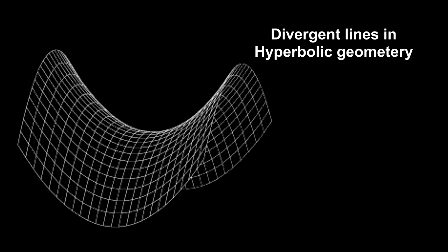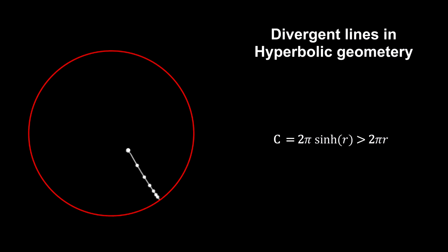The best example of this is the surface of a saddle, or a potato chip. Here, the sum of the angles of a triangle is less than 180 degrees, and the circumference of a circle is more than 2 pi times its radius. This is hyperbolic geometry. It represents space with a negative curvature.